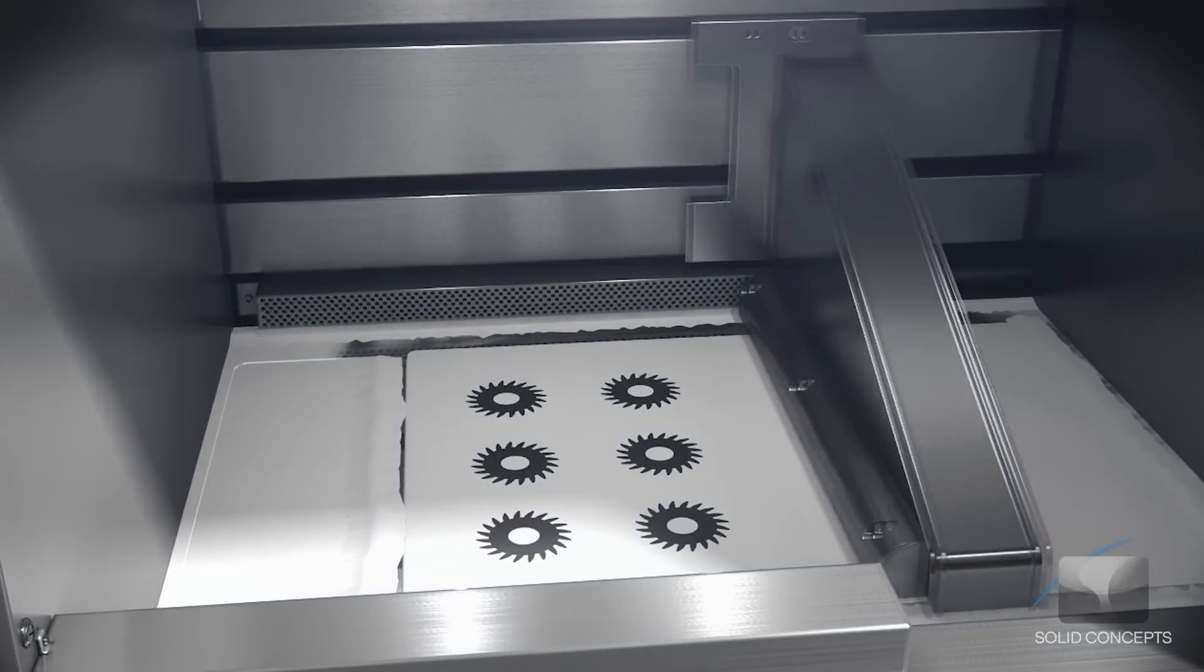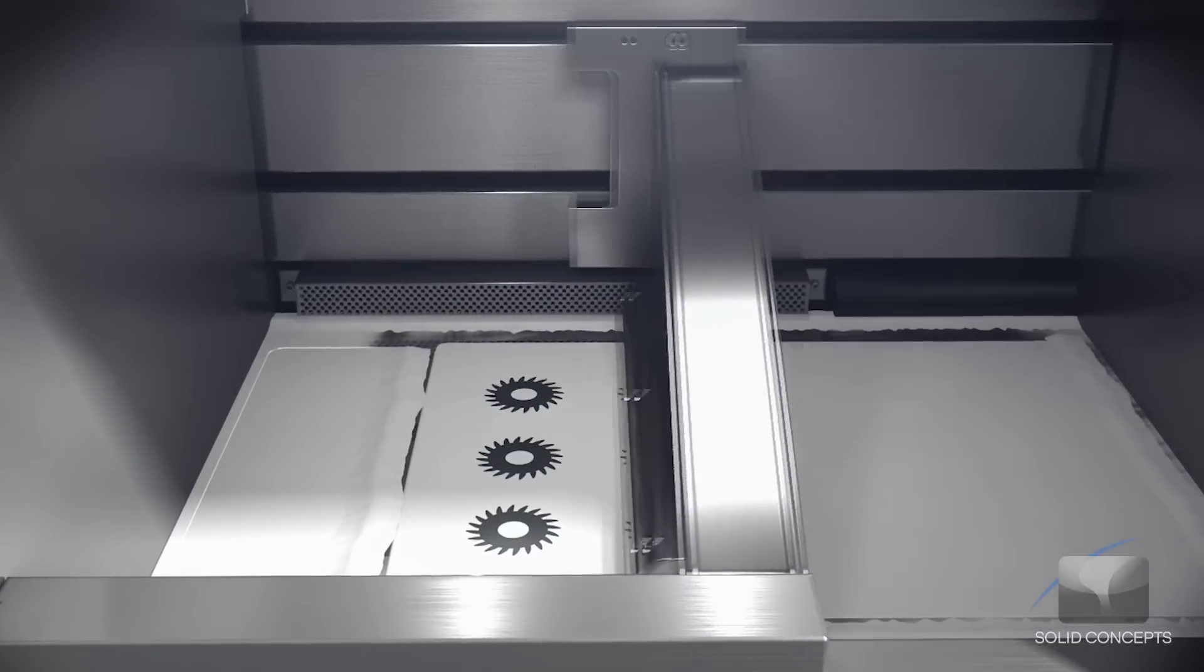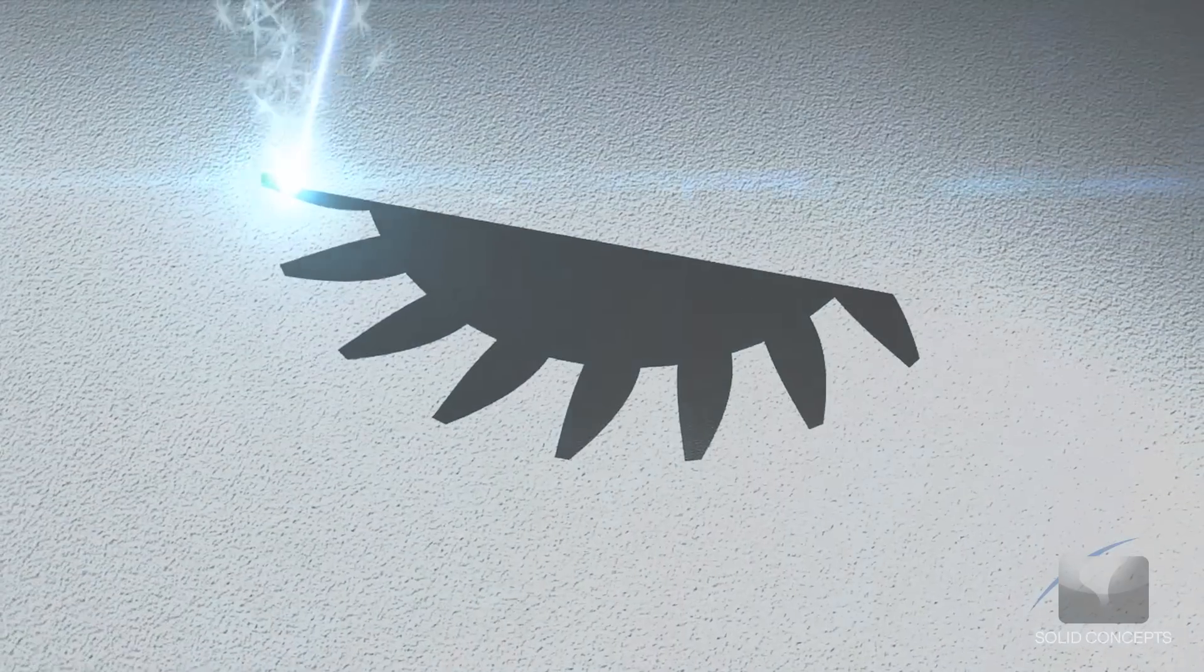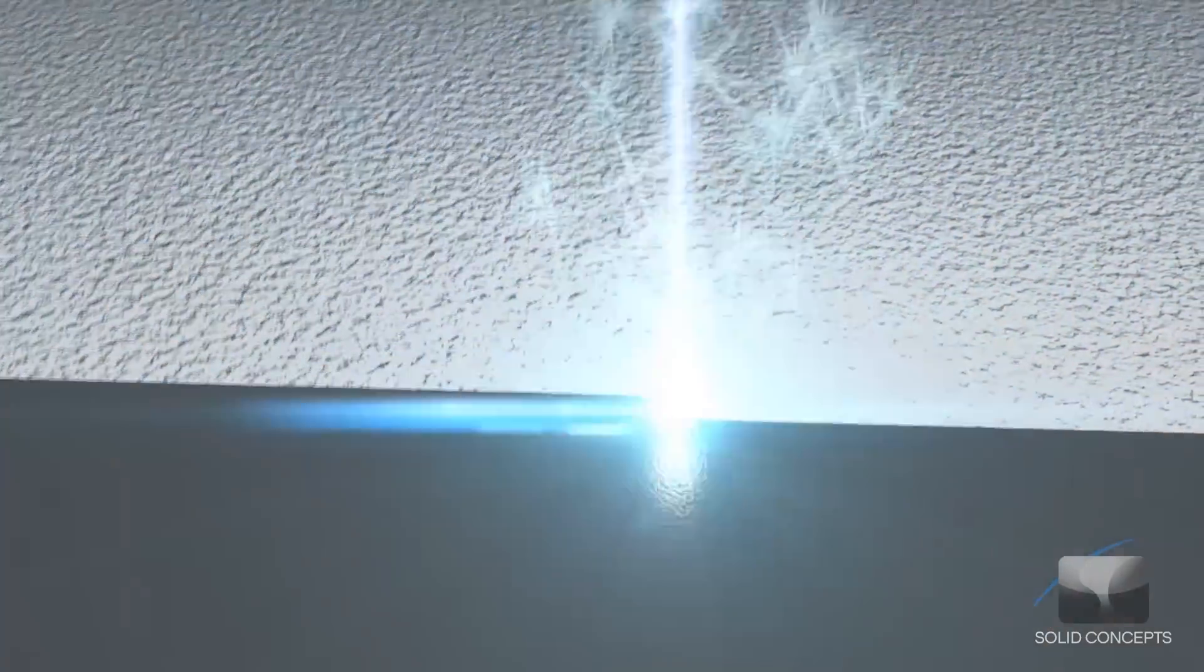A recoater assembly pushes powdered metal material from the powder supply to create a uniform layer over the base plate. A laser then draws a 2D cross section on the surface of the build material, heating and fusing the material.